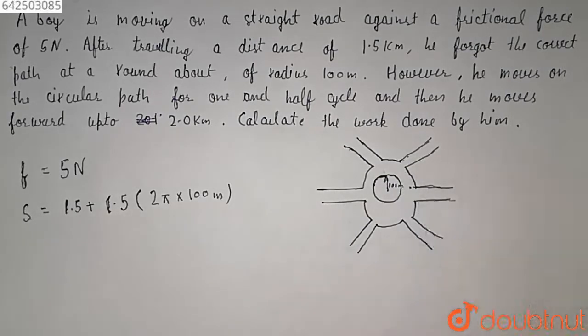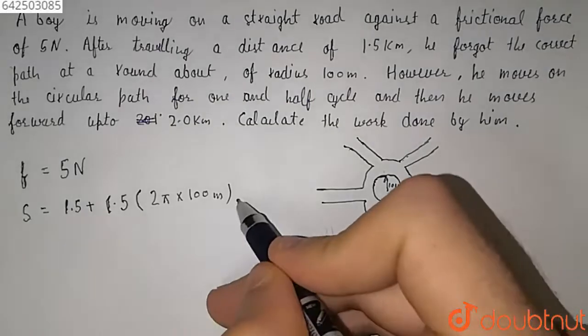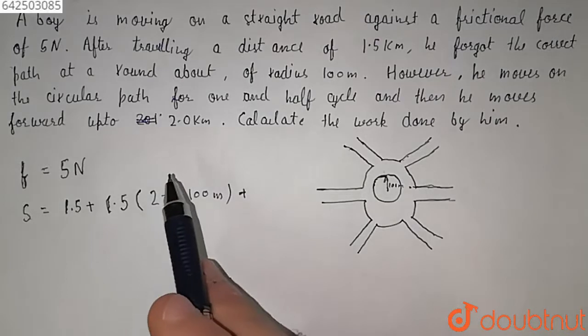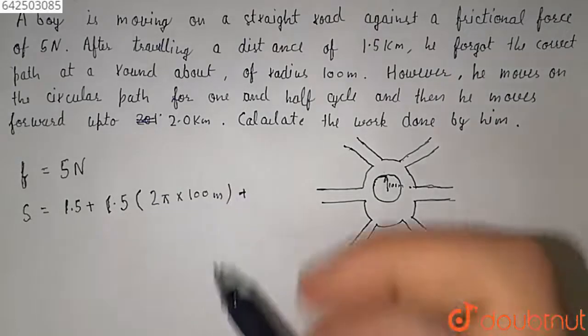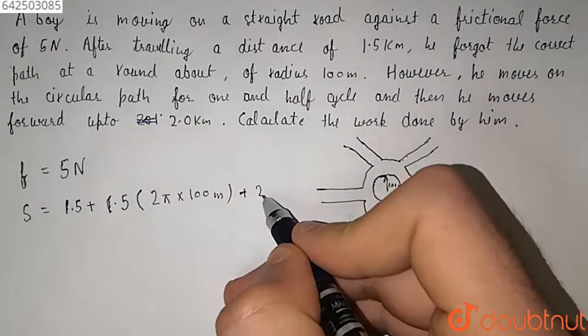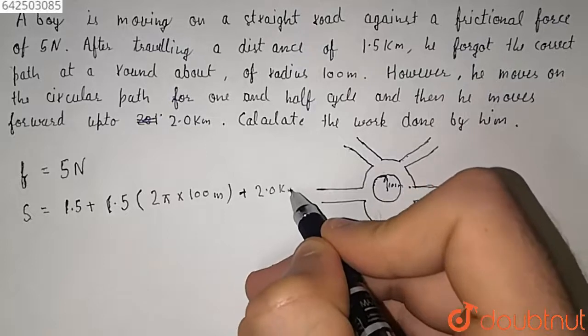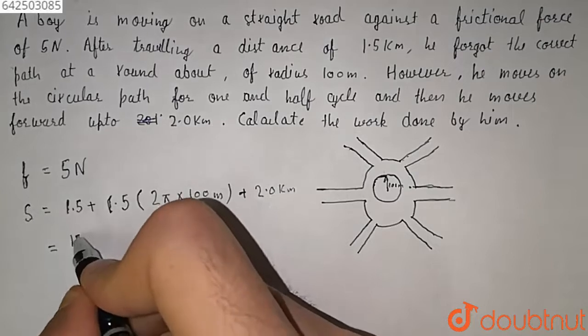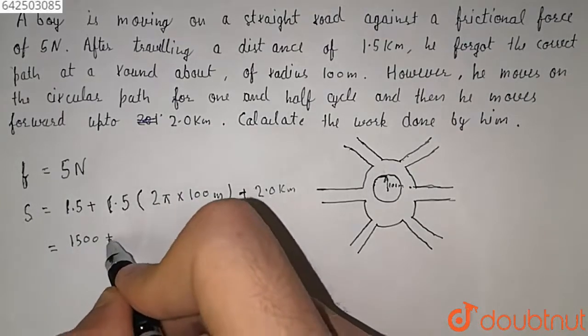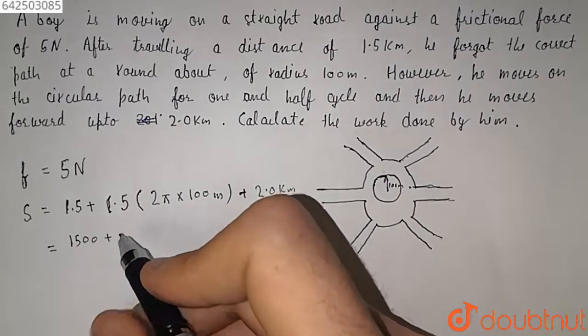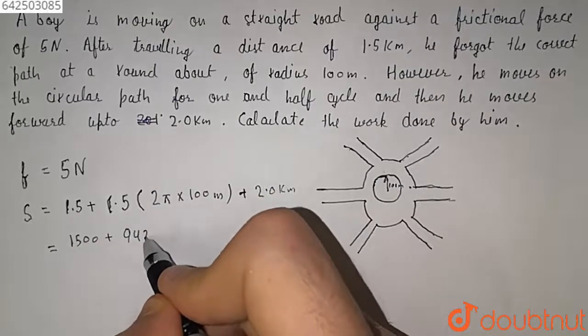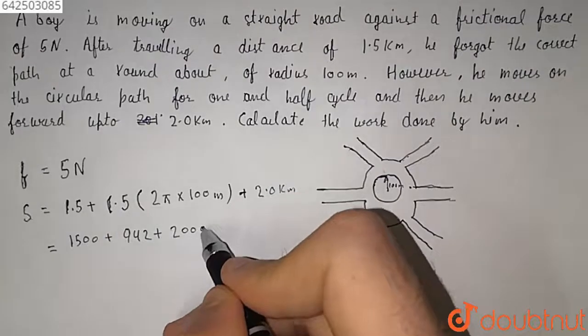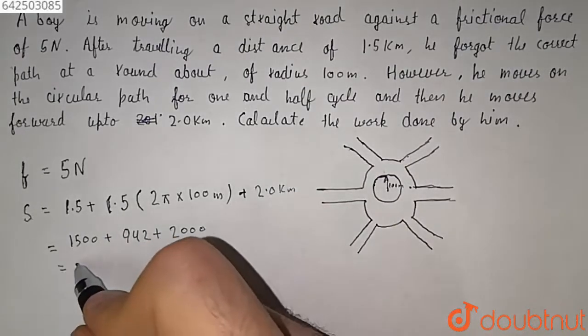r here is 100 meters. So this is the distance, plus the distance that he moves forward up to 2 kilometers. So it will be equal to 1500 plus 942 meters plus 2000 meters, so our distance will be equal to